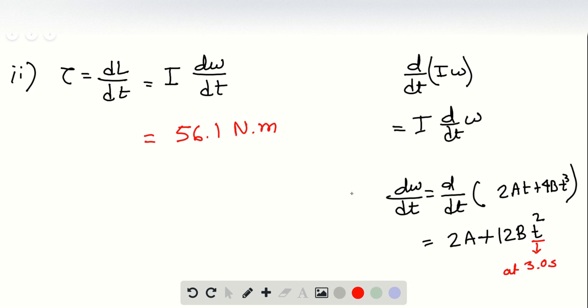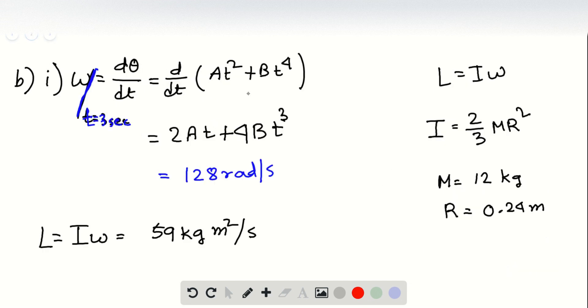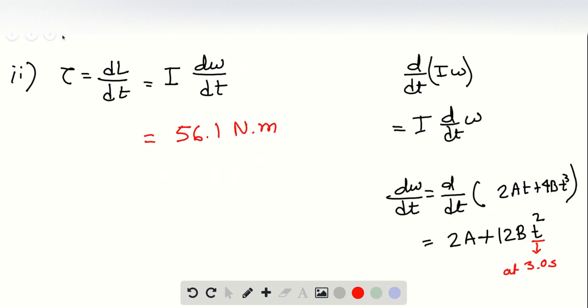So you should do the calculation by yourself. All you got to do is put A and B and t here for d omega dt, and for I you just have to put the mass and radius to get the I. So once you know your I and d omega dt, you just multiply them together to get the torque.